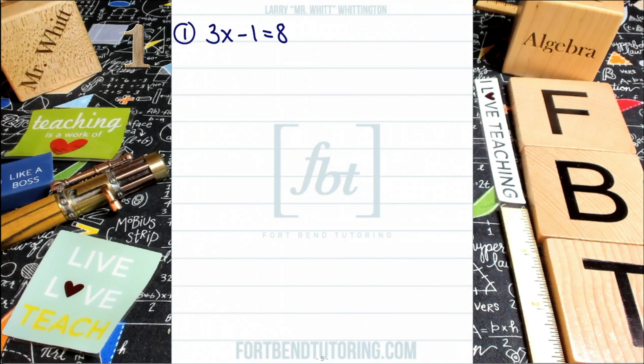With problem number one, we have 3x minus 1 equals 8. Just like in our first video, solving linear equations part 1, where we were solving one-step linear equations, your goal remains the same, and that is to get the variable by itself, to solve for a positive 1x, in this case, to the first power.